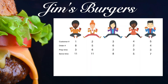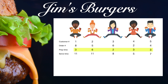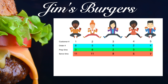There are 5 customers in line. You've assigned each customer a customer number. Each customer is then associated to an order number. Each order has a pre-determined preparation time. And the serve time is the sum of the order number and the preparation time. The orders are delivered to the customers in the following order.